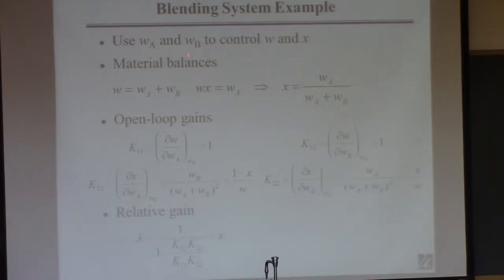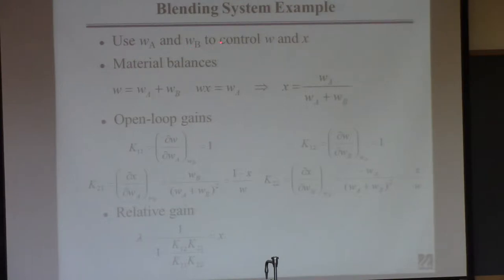I'll just do it. So you remember this example? This is where you've got two streams of pure A and pure B and you're mixing them together to control the total flow — total mass flow and mass fraction. Just a mixing system in a valve, basically. I showed this to you previously.